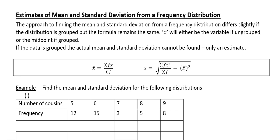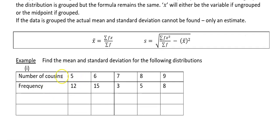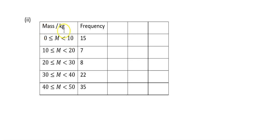Why it is so important that we understand our boundaries is that quite often things will be given in boundary form and we will need to be able to use them. You need to be able to find the midpoints of those particular boundaries to find an estimate of the mean. So we're going to look now at finding mean and standard deviation from frequency distributions.